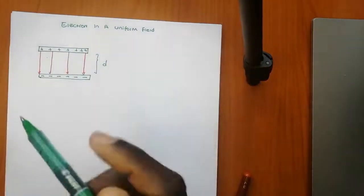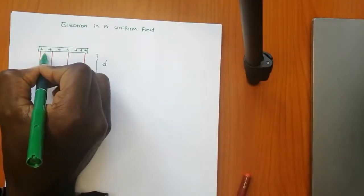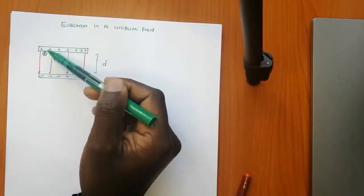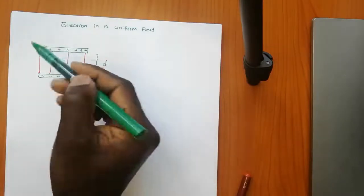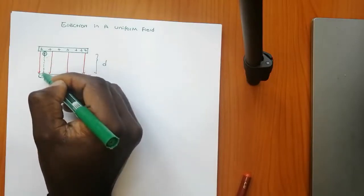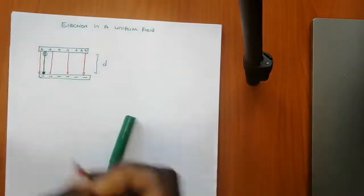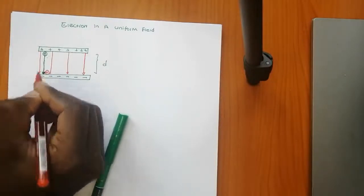Let's think about this for a second. Let's say I put a positive charge somewhere here. What is going to happen? Because it's just next to the positive plate, it will repel. Therefore, it will force this positive charge to move towards the negative plate — it will move in this direction. So you will end up having a positive charge somewhere here.